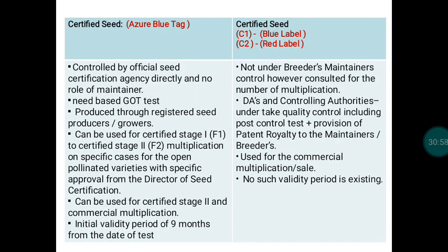Certified Seeds under the OECD scheme — C1 carries a blue label, C2 a red label — are not under breeders' maintenance control. The designated controlling authority undertakes quality control measures including post-control tests and provisions for paying patent royalties to maintainers and breeders. Certified Seeds are used for commercial multiplication and sales. Unlike Foundation Seeds, Certified Seeds have no validity period.